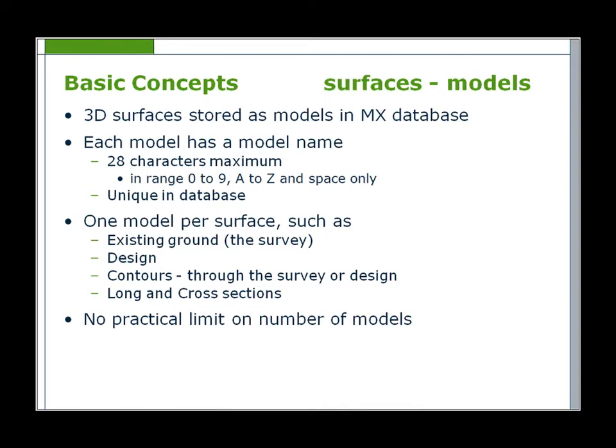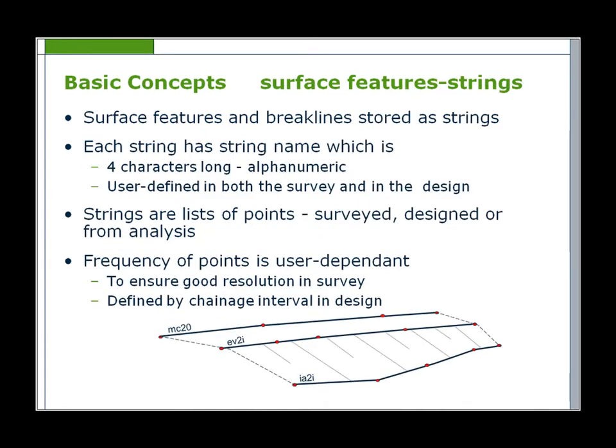3D surfaces are stored as models in the MX database and each model has a model name. This model name can have up to 28 characters, utilizing alphanumeric characters and spaces only. Each model is unique in the database and there is one model per surface, such as survey, design, contours, long and cross sections.